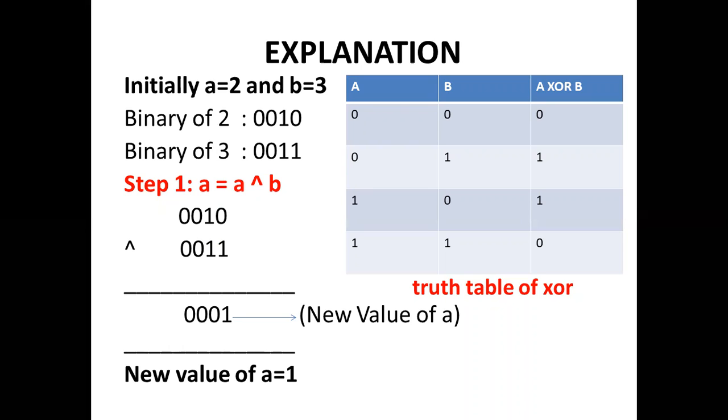According to truth table of XOR, if both the bits are same, result is 0. Otherwise, result is 1. When we do bitwise XOR of 2 and 3, we get 1, which is the new value of A.